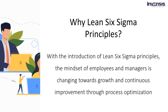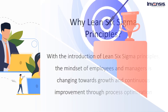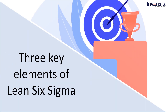The American Society for Quality defines Lean Six Sigma as a fact-based, data-driven philosophy of improvement that values defect prevention over defect detection. It drives customer satisfaction and bottom-line results by reducing variation, waste, and cycle time, while promoting the use of work standardization and flow, thereby creating a competitive advantage. It applies anywhere variation and waste exist, and every employee should be involved. Now, let's move ahead to discuss the three key elements of Lean Six Sigma.